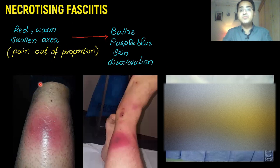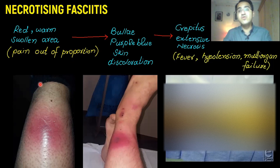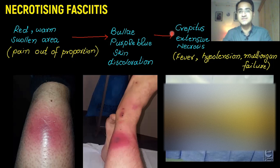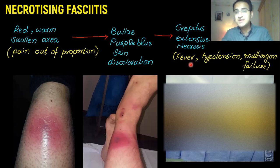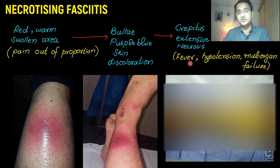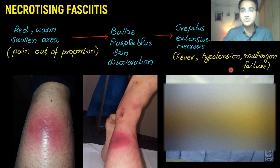Then it forms blue-purple skin discoloration. At the end, it forms gas gangrene, in which there is gangrene and gas that results in the formation of crepitus. When you press it, you will hear the sound of bubbling gas, with extensive necrosis. That extensive necrosis causes multi-organ failure and a shock-like condition, because it is home to various bacteria and toxins. It causes fever, hypotension, and multi-organ failure leading to death.